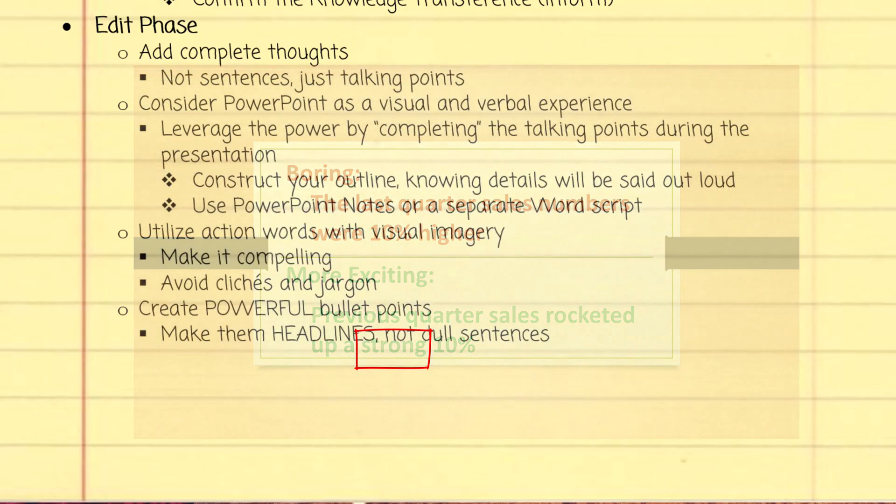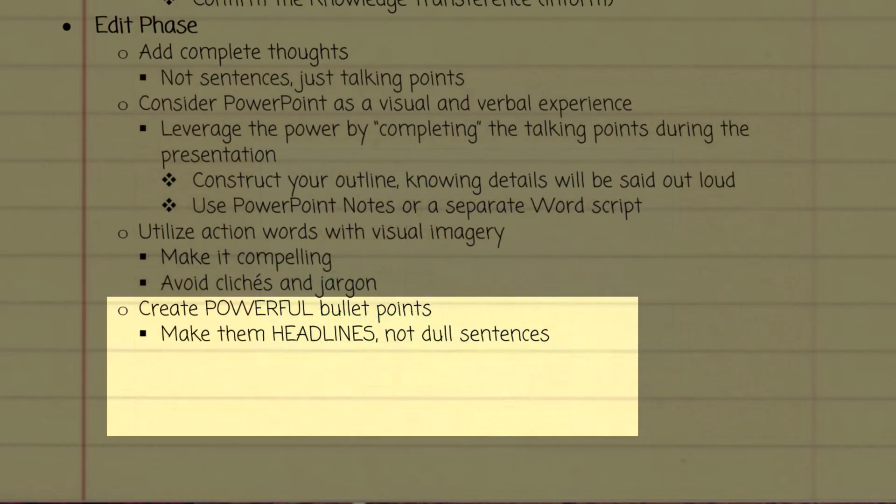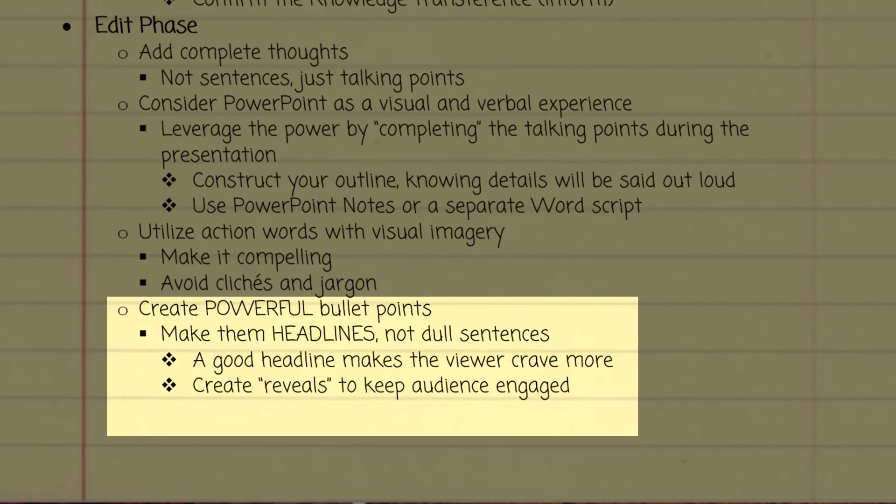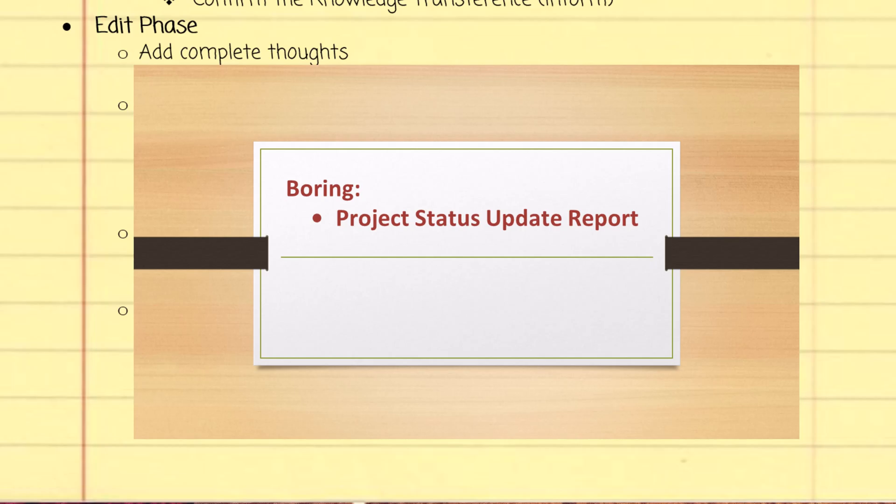Next up: powerful bullet points. Compose bullet points like headlines, not as dull sentences. What's a good headline? Something that entices people to click on the link to read the complete story, or wait for the follow-up slide page. It should be short and intriguing. If you saw the following two bullet points, which one would you want to know more about? Project status update report, or team exceeds 10 goals and misses one. Yes, that does sound like clickbait, but that's the point. It states the project update, but your audience now wants to know more.